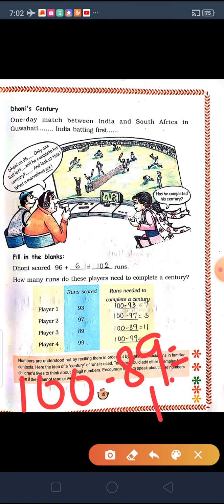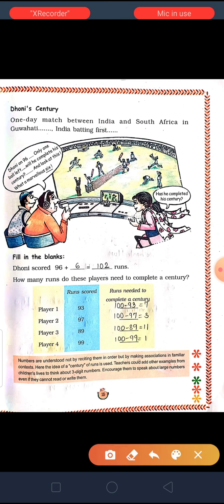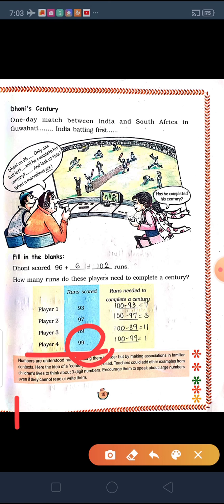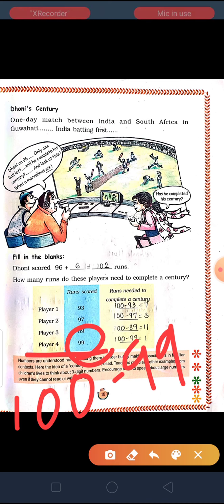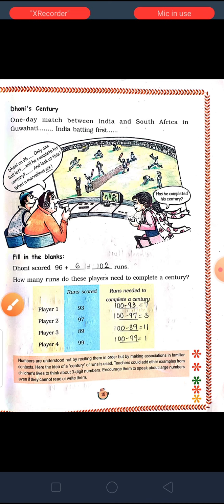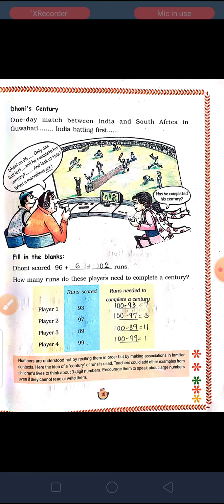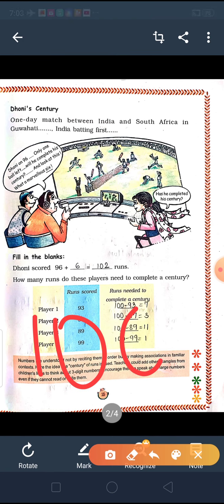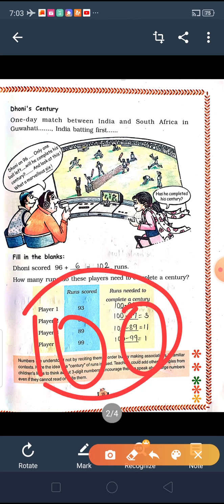Player 4 has already scored 99 runs. So 100 minus 99, if we do, we get 1. So one more run player 4 needs to score. By this, we learned about some bigger numbers — 3-digit numbers, that is 100. Alright, 100 is the first 3-digit number.